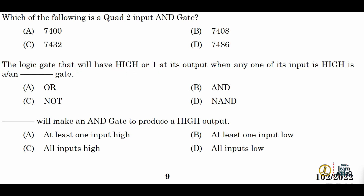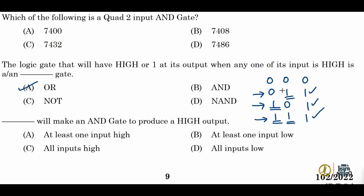Next: which logic gate will have a high output when any of its inputs is high? Considering the OR gate, its truth table is: 0·0 = 0, 0·1 = 1, 1·0 = 1, 1·1 = 1. We can see the output is high when any one of its inputs is high. In all other cases the output is 0.